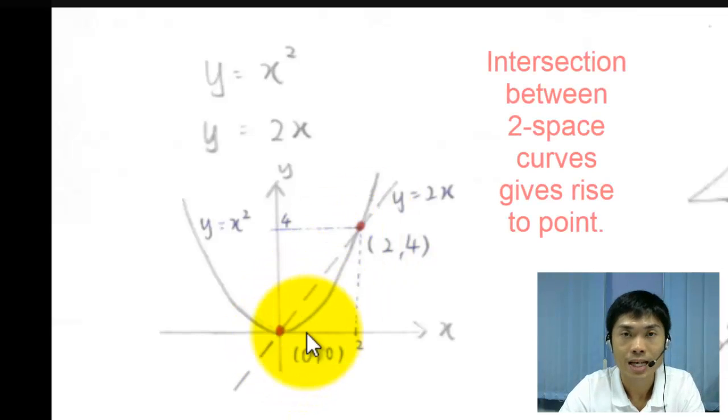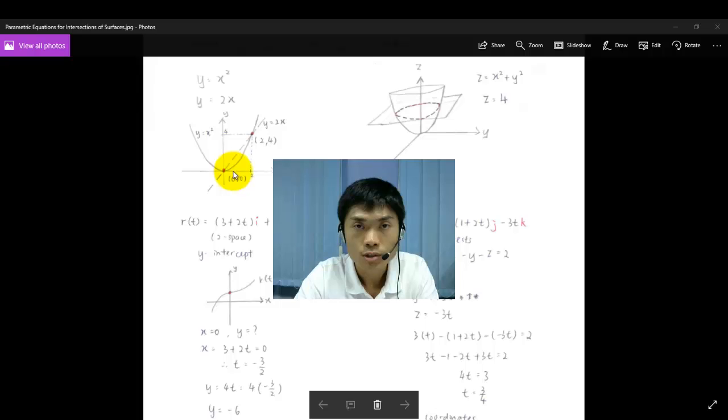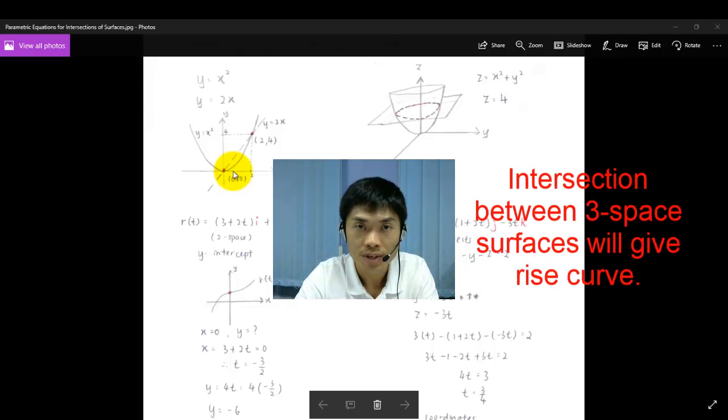And this is how you get the intersection points for two-space curves. But what if you have two quadric surfaces or any three-space surfaces and both of the surfaces actually intersect or cut across each other?